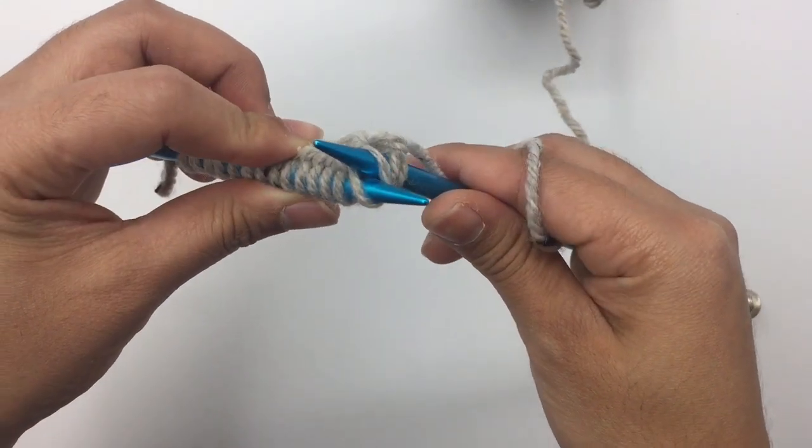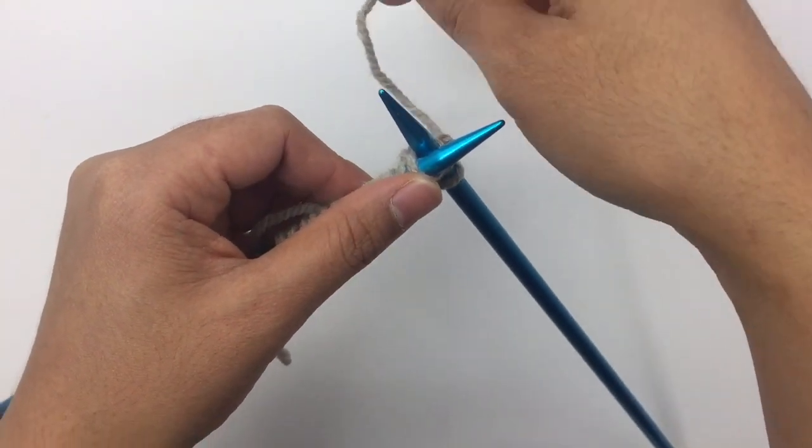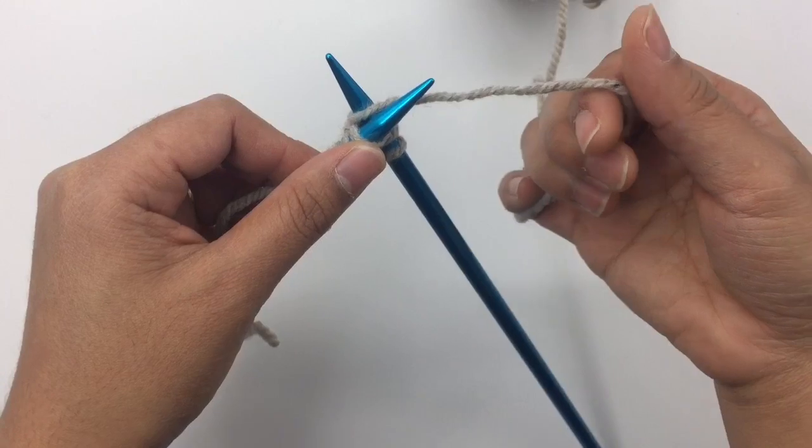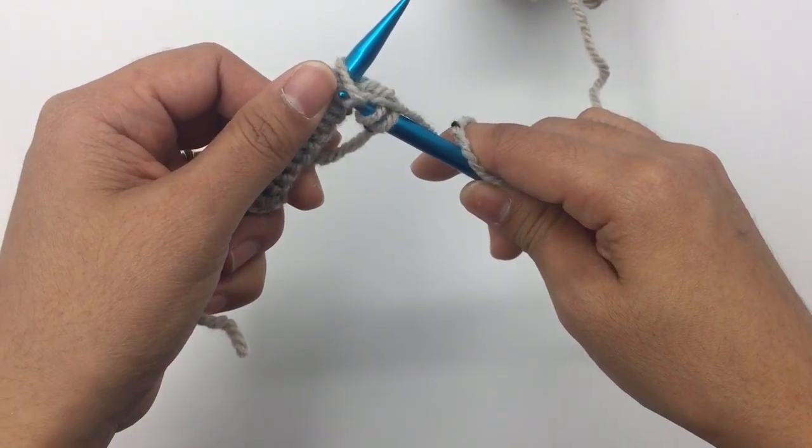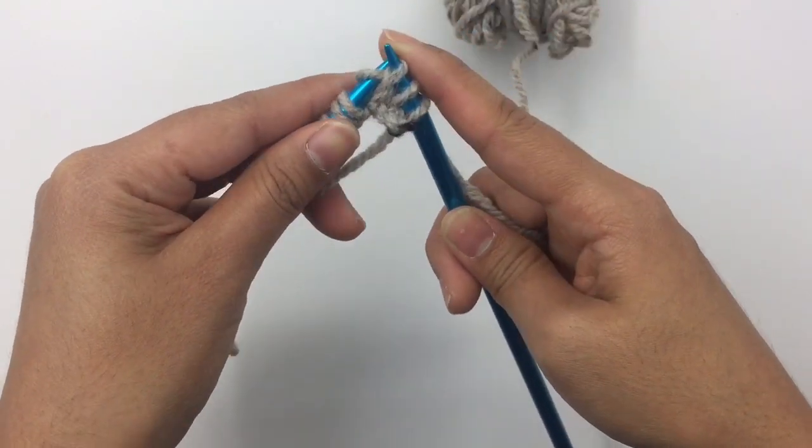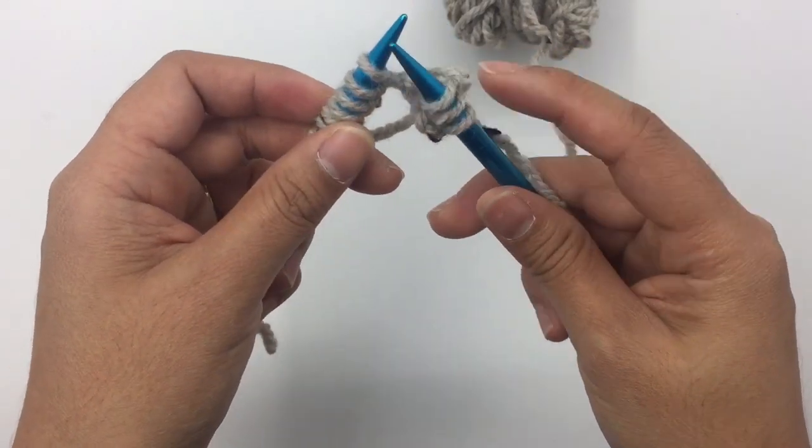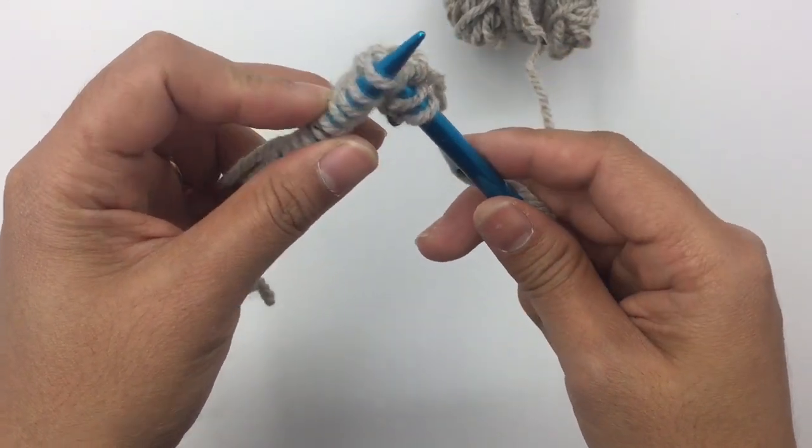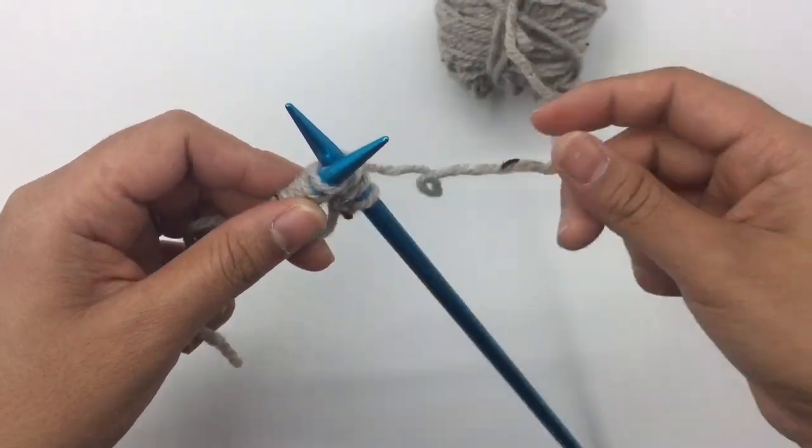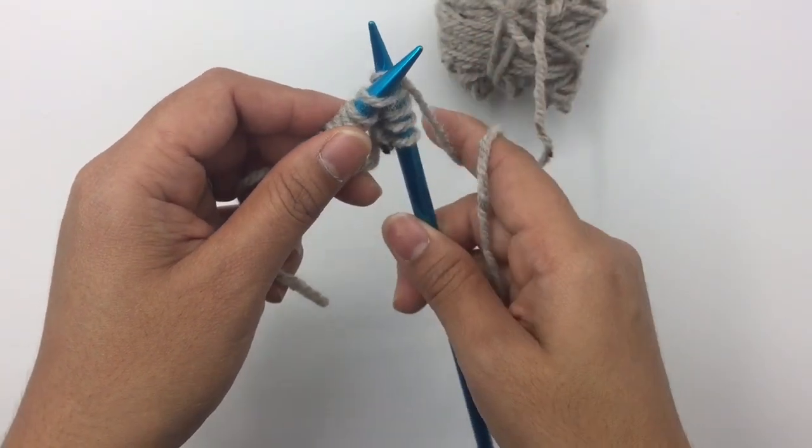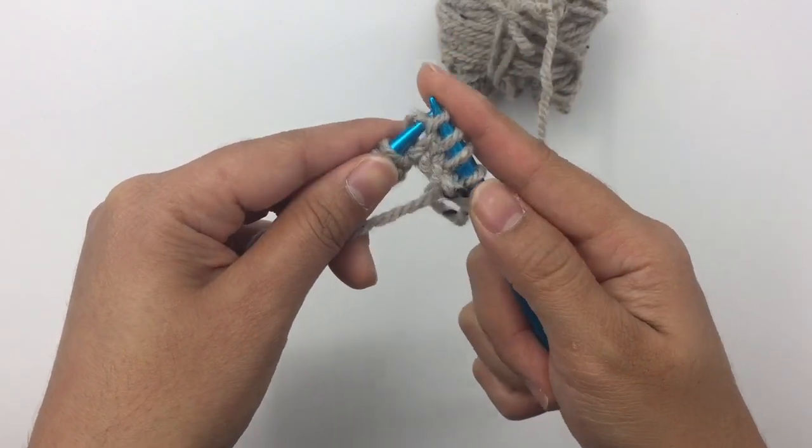Insert the needle and grab the yarn around your right needle. Bring the stitch up and drop the stitch. Now we have three stitches. Repeat that again. Insert and grab the yarn around the right needle. Bring the stitch up and drop the stitch.